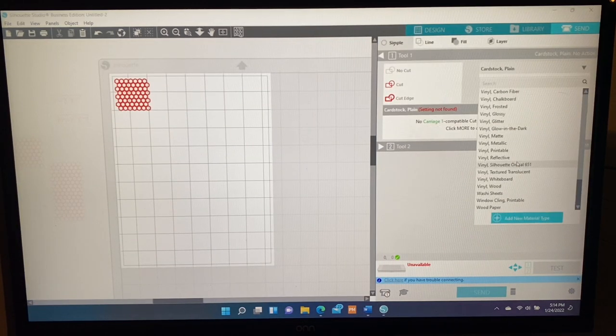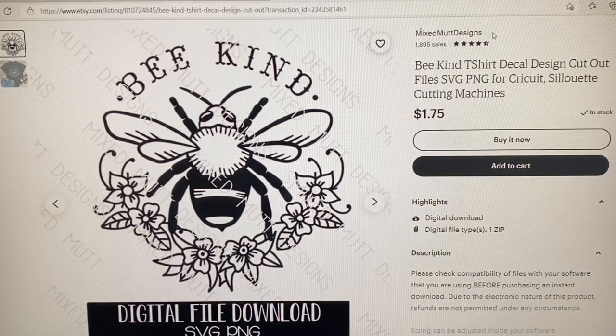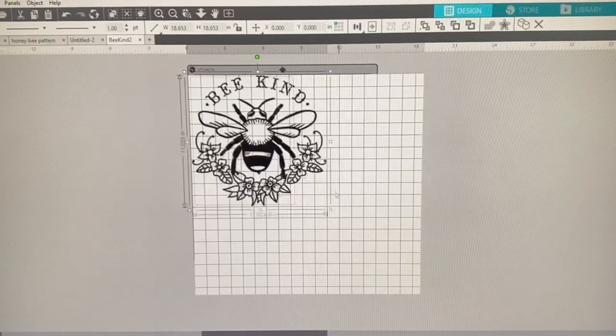I'm using the bees and I am using the honeycomb SVG to cut out in gold holographic vinyl. And then I'm printing off the bees and a saying I got on Etsy right here. I'll have it linked as well for my popsockets and my pins. So all I'm doing is resizing.